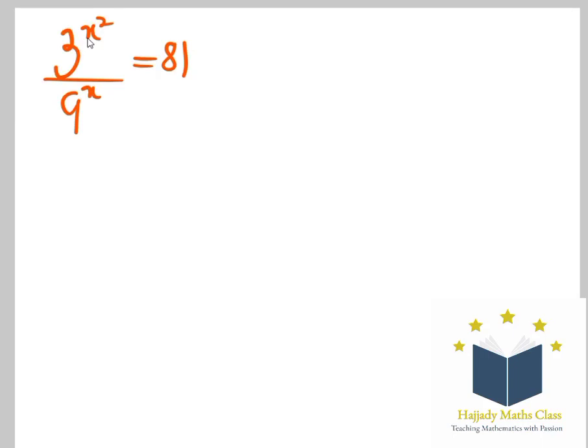We have 3 raised to power x raised to power 2 over 9 raised to power x equals 81. In solving this, using the rule of indices,